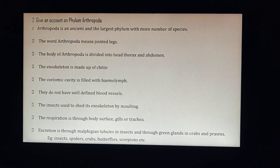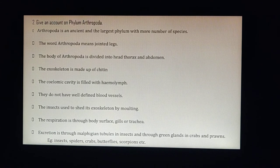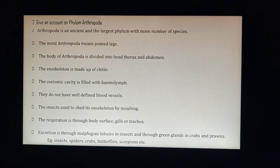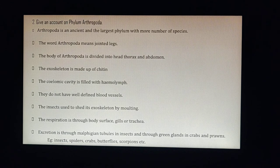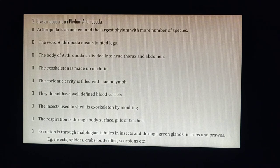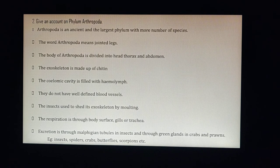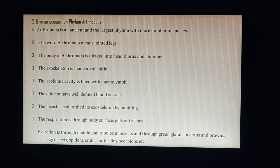The exoskeleton of arthropods is made up of chitin — a hard shell-like covering found in insects and other arthropods. The body cavity is filled with hemolymph. Unlike humans who have hemoglobin, insects have hemolymph without the globin protein, giving their blood a whitish color — visible when an insect is crushed.